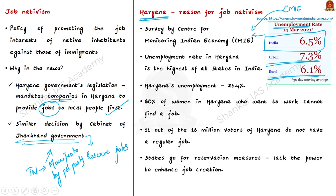The Centre for Monitoring Indian Economy (CMIE) is a leading business information company and independent think tank. It produces economic and business databases and develops specialized analytical tools for decision-making and research, and analyzes data to decipher economic trends. According to its survey data, the unemployment rate in Haryana is the highest of all states in India at 26.4%, far above the national average.